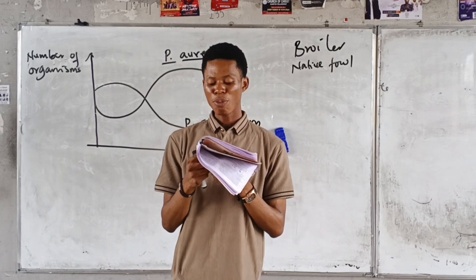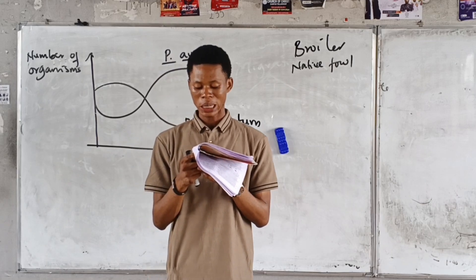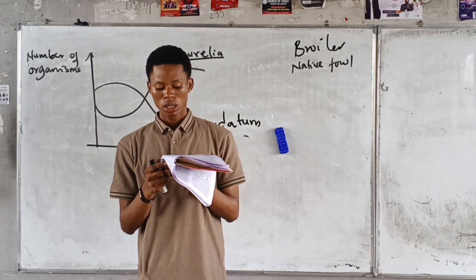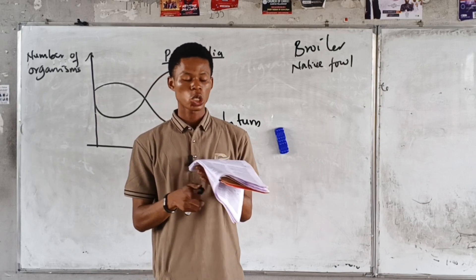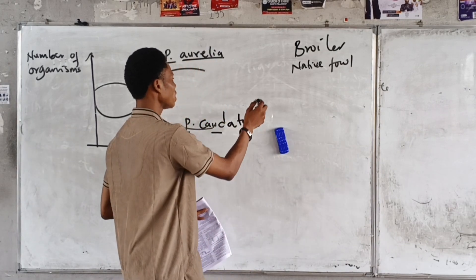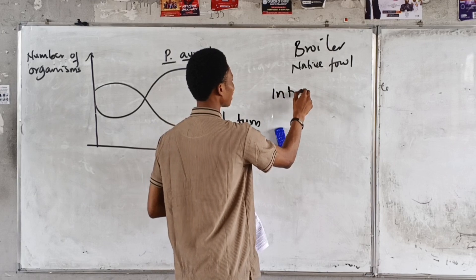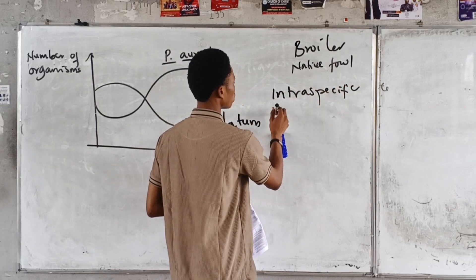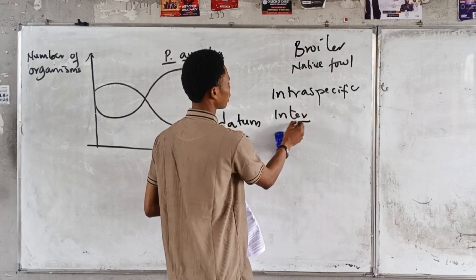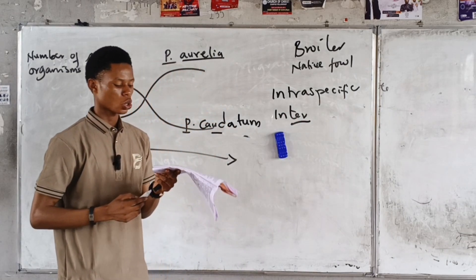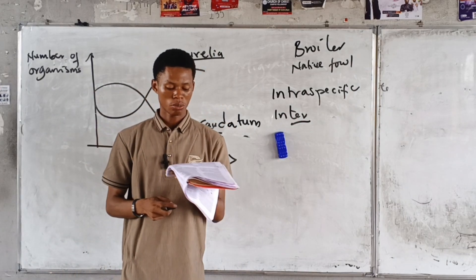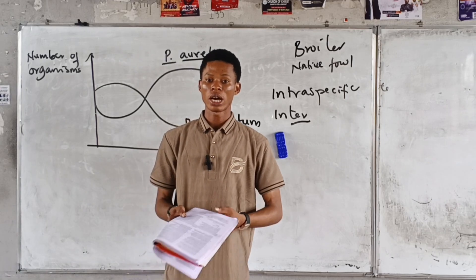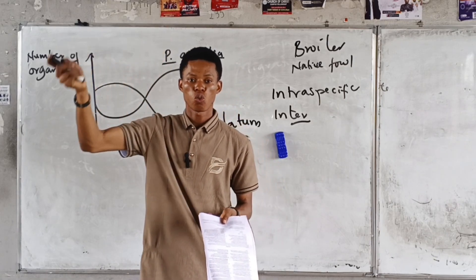Last question: the type of competition between birds of the same species is dash. The answer is intraspecific. Remember — if it is between the same species, it is intraspecific. If it is between different species, it is interspecific. Always use interhouse sport to remember that. Alright, so we are going to look at another topic — move on to watch the next topic.